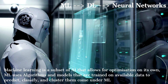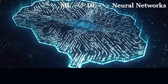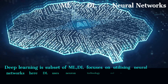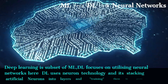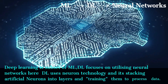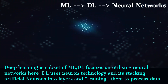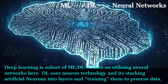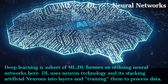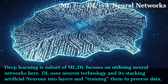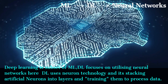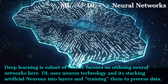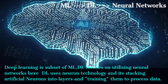When it comes to deep learning, deep learning is a sub-domain or subset of machine learning. While machine learning focuses on smaller problems using a broader range of algorithms, deep learning is a specific subset that utilizes artificial neural network technology, stacking artificial neurons into layers and training them to process data to solve complex problems or tasks.